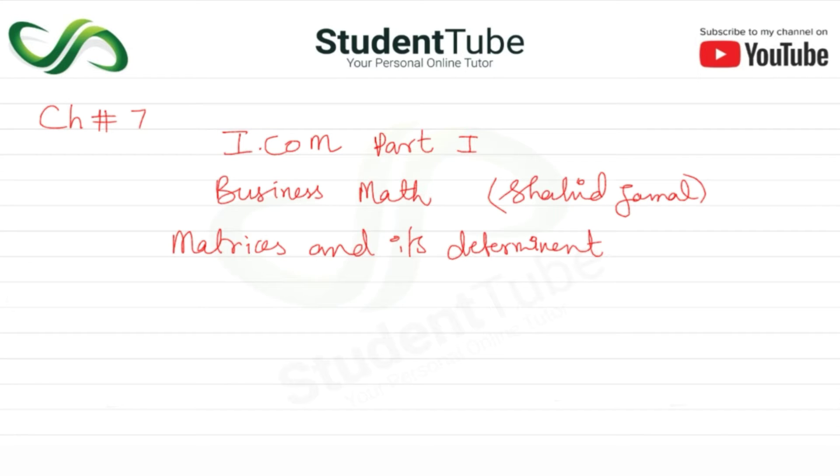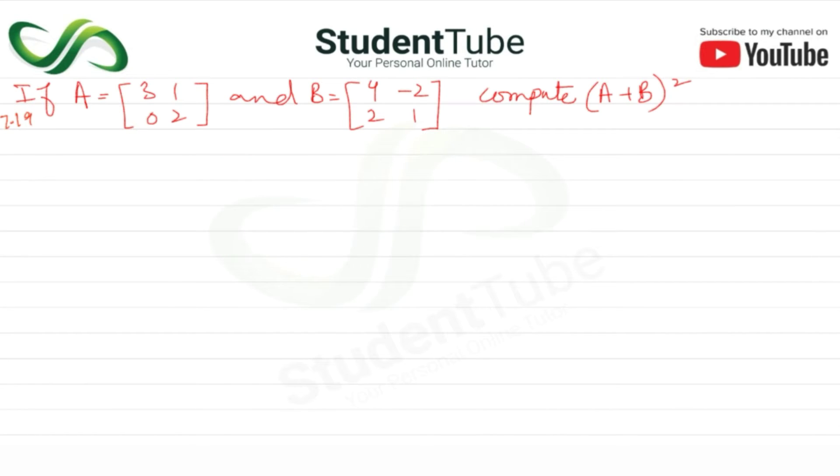Assalamualaikum, welcome to Student Tube. This lecture is Chapter 7, Part 1, Business Math from the book by Shahid Jamal. The chapter is Matrices and Its Determinant. Question 19: A is equal to [3, 1; 0, 2] and B is equal to [4, -2; 2, 1]. Compute (A+B)².